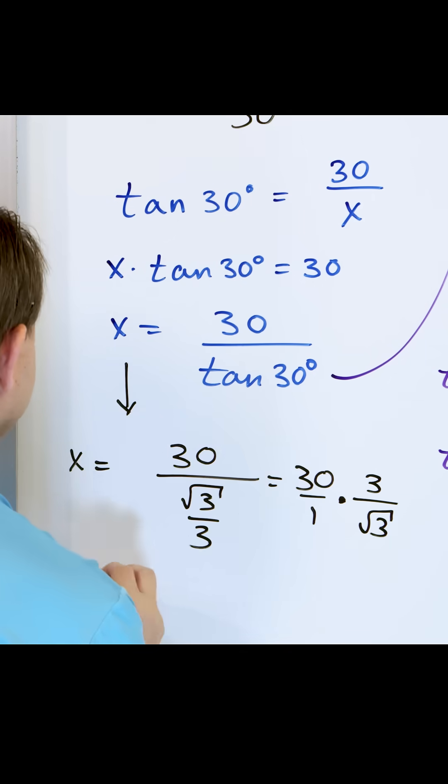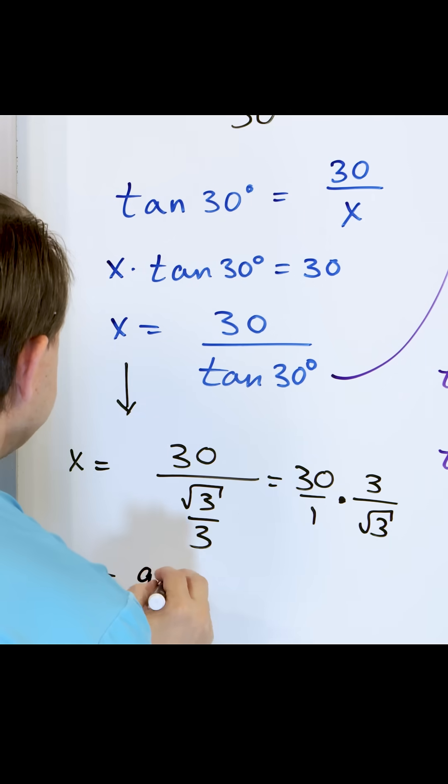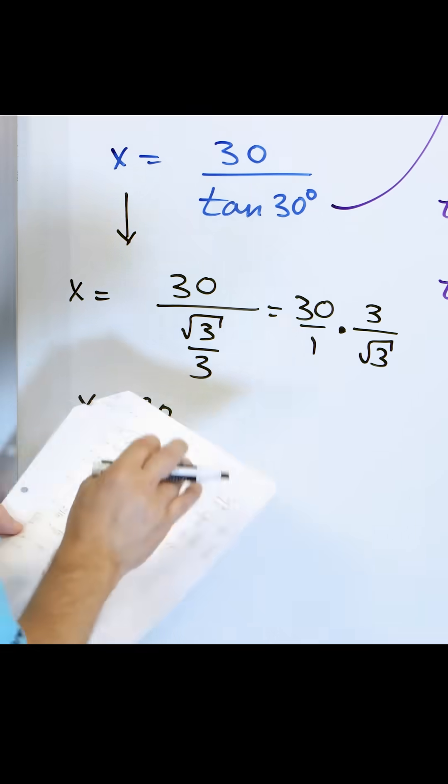So what do you get? You get x is equal to multiply the tops, you get 90, you get another square root of three on the bottom, which we hate.